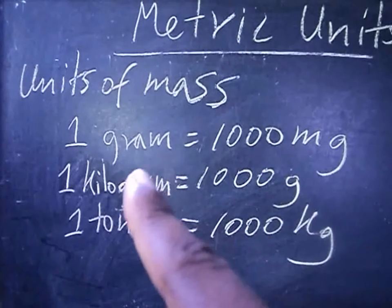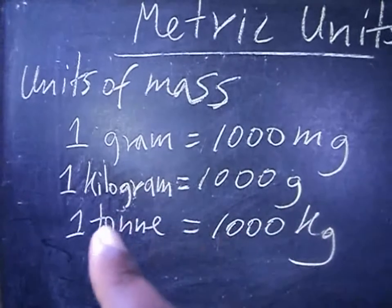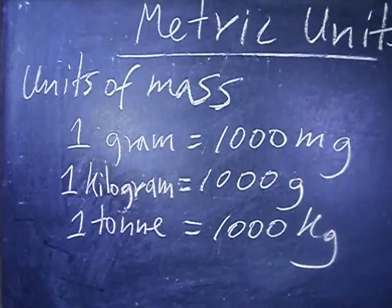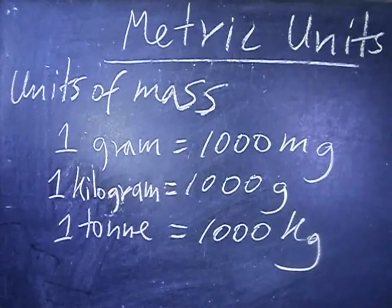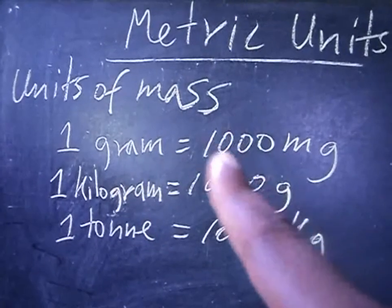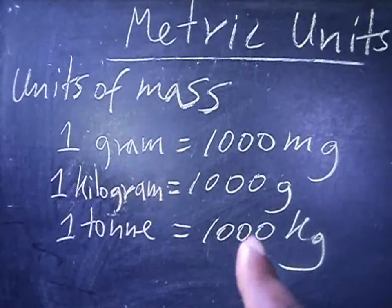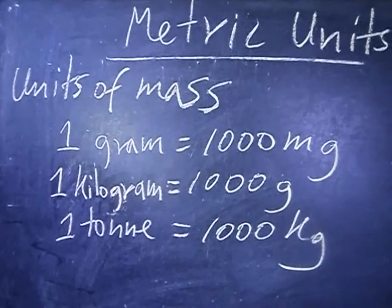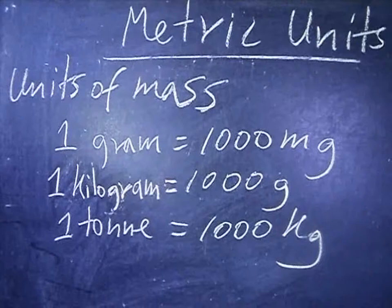So a thousand grams in one kilogram, and a thousand kilograms in one tonne — that gives you a million grams in one tonne. It is very important to note that the gram is the common unit of mass: 1000 milligrams equals one gram, 1000 grams equals one kilogram, and 1000 kilograms equals one tonne. There are of course other units in between, such as the decagram and so on.